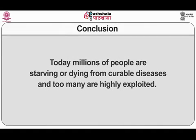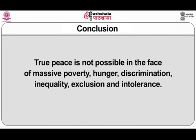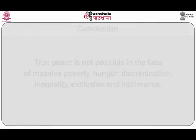Conclusion. Today, millions of people are starving or dying from curable diseases and too many are highly exploited. True peace is not possible in the face of massive poverty, hunger, discrimination, inequality, exclusion and intolerance. Thus, in order to realize the group right to peace, there is a need for cooperation and holistic implementation by states and non-state actors, including individuals, groups within civil societies, NGOs, TNCs and international organizations, that recognize duties and responsibilities in this regard and look into the factors which promote world peace and order. Thank you.